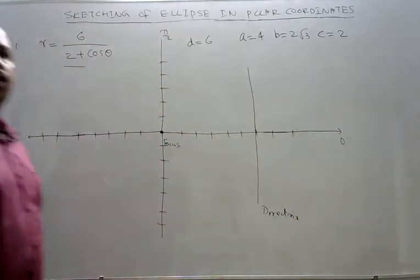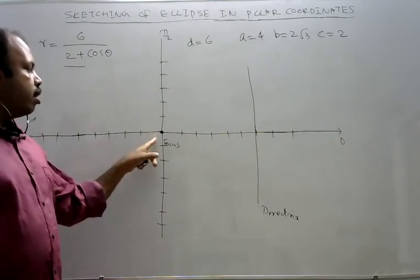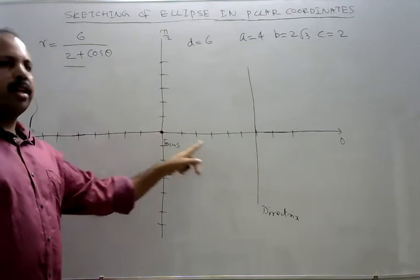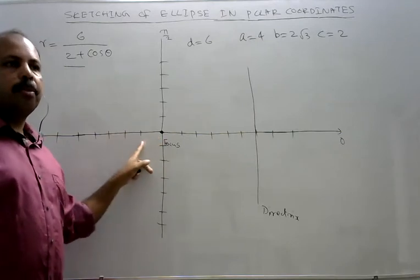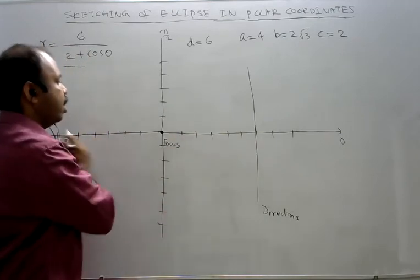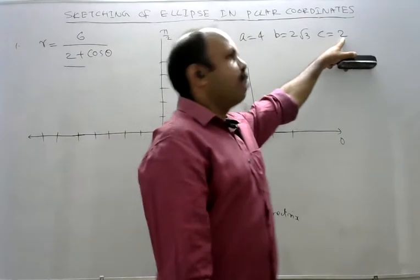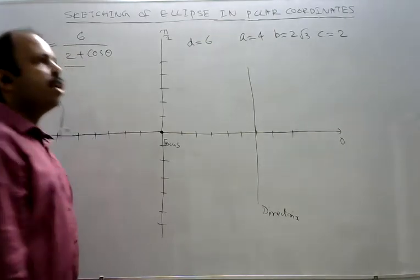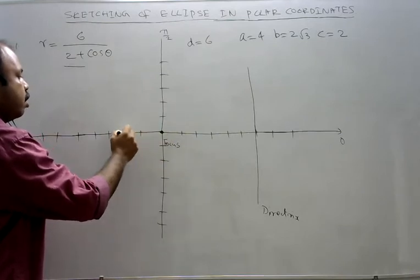Our next step is to determine the center. The center will be, remember, for ellipse, the position of center will be away from the focus, but not in the direction of directrix, in the opposite direction of directrix. That means center will not be in between focus and the directrix. It will be in the opposite direction of directrix from the focus. Now, how will we find out the center? We have C. C is the distance of center from the focus. That means center is 2 units away from the focus. It is in the opposite direction of directrix. So that means 1, 2. This is the center.